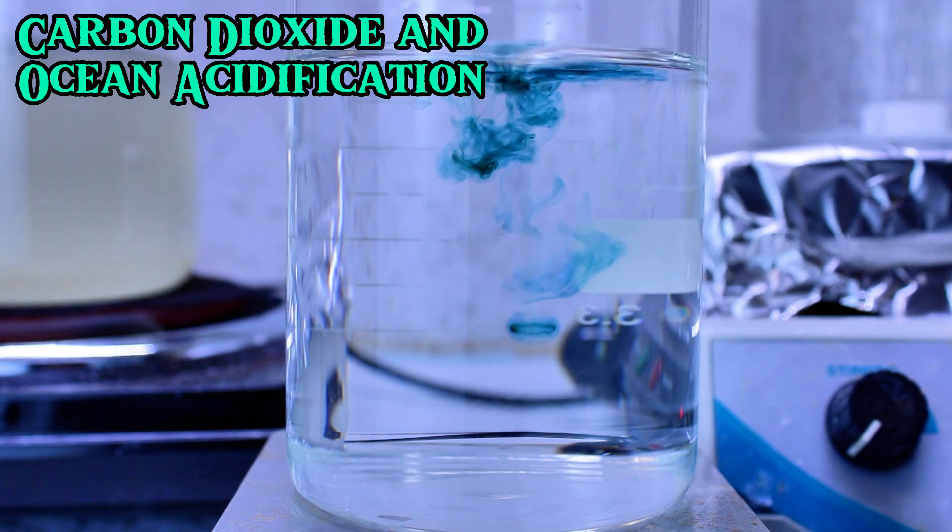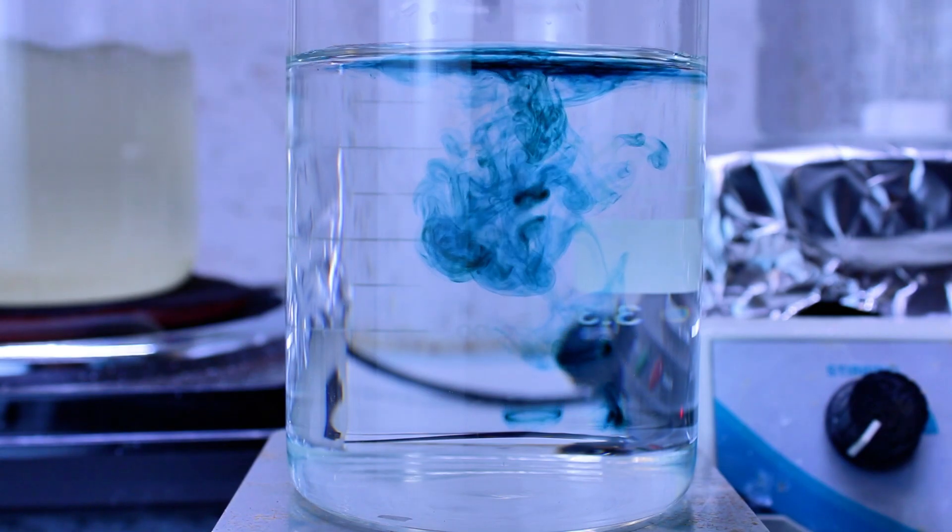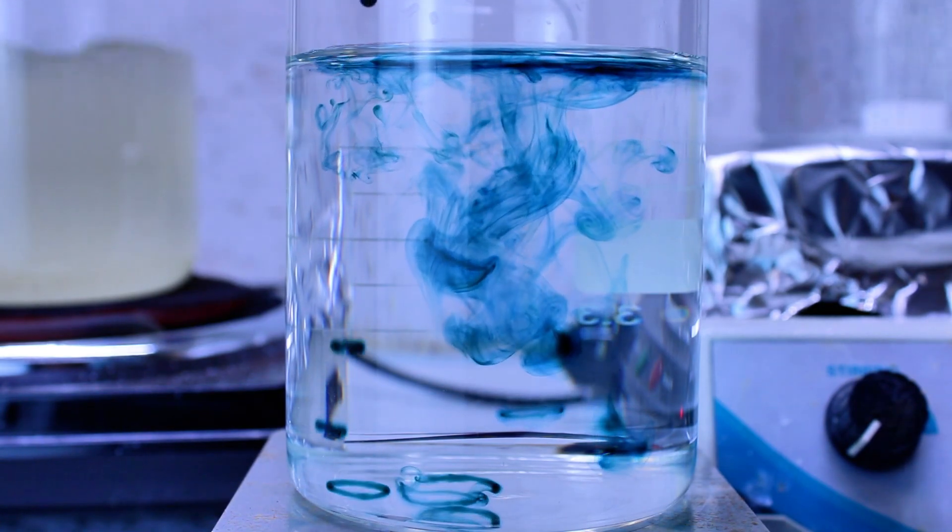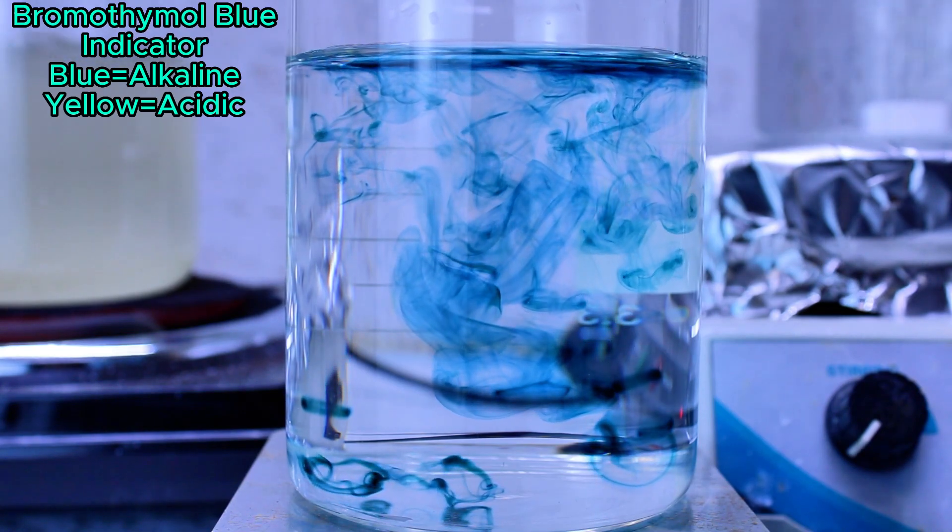Today I'm going to talk about carbon dioxide and how it's causing our oceans to become more and more acidic. Now to demonstrate this, I begin by dissolving an indicator called bromothymol blue in some distilled water.